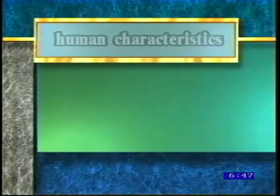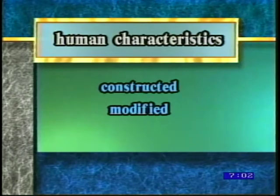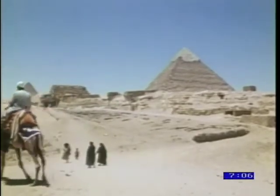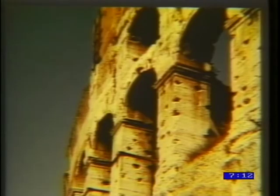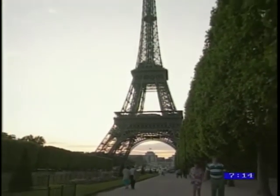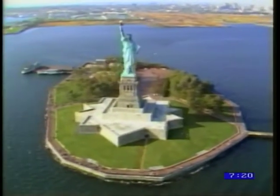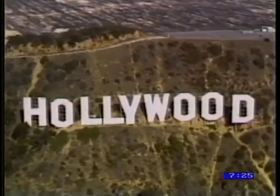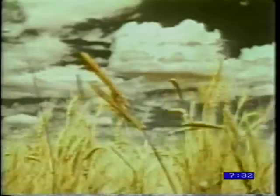Human characteristics of a place are those features that were either constructed, modified, or in some way influenced by humans. These features include the Great Pyramids of Egypt, the ruins of the Colosseum in Rome, as well as more recent man-made landmarks like the Eiffel Tower in France, the Statue of Liberty in New York Harbor, and the Hollywood sign in Los Angeles. This category could also include more subtle examples of human characteristics like the rice paddies in East Asia and the wheat fields in Kansas.